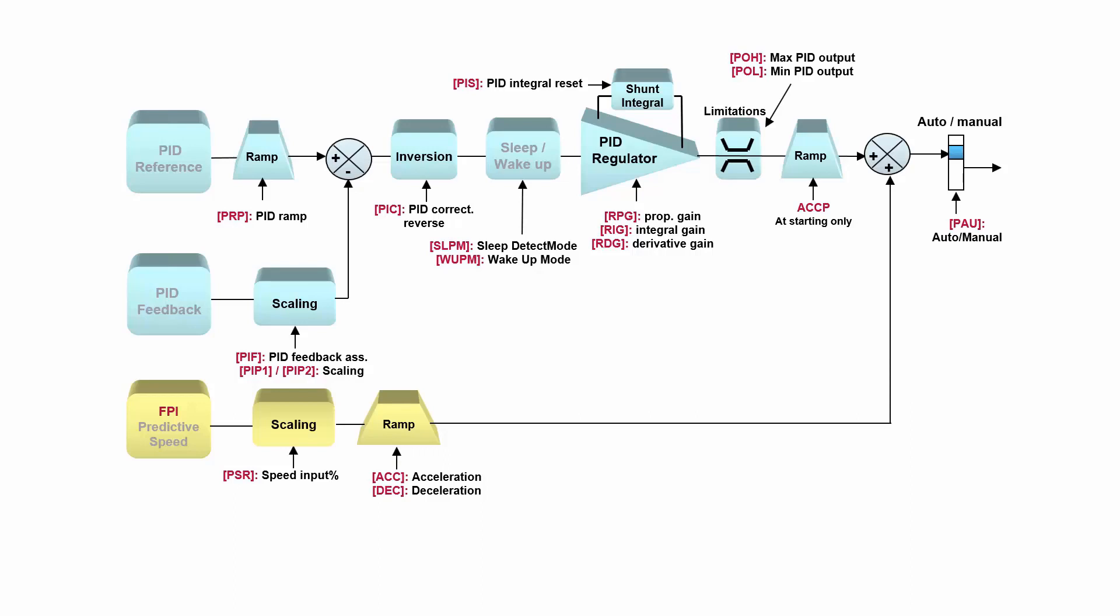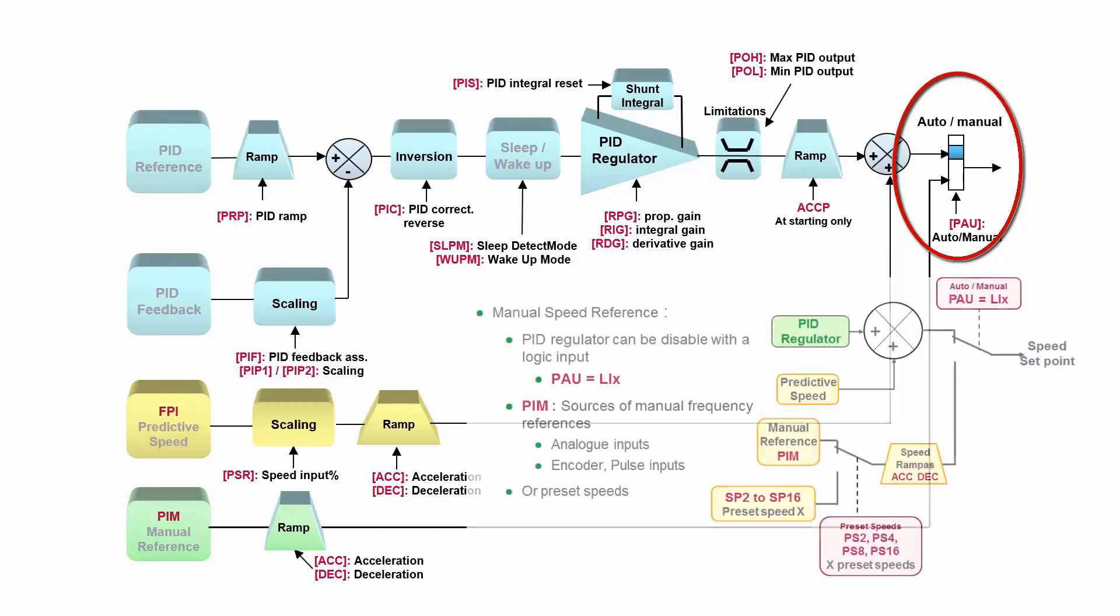Additionally, we can disable, or let's say make auto-manual work of our PID output. So we can have manual speed reference which enters the variable speed drive. One important thing to say: this is not disabling the PID regulator, but this is only switching the output of PID regulator to speed set point. When you are in manual mode, the PID regulator is still working. When you switch back to auto, the PID regulator takes the control of the drive.